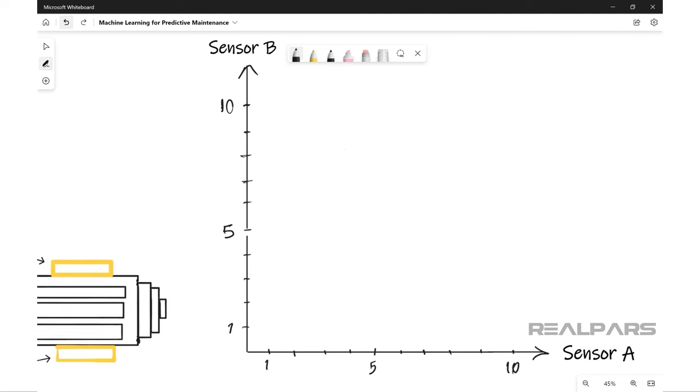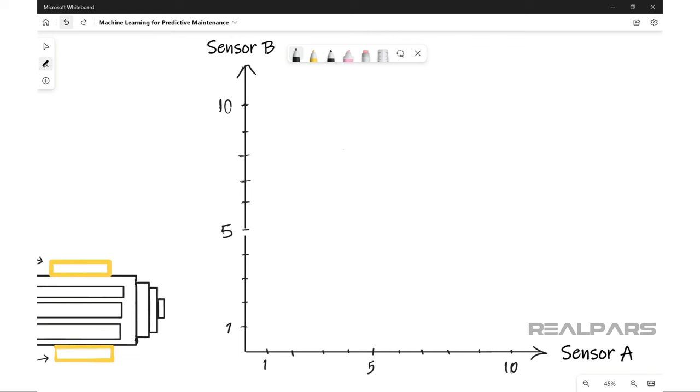Now let's say that at a random point in time I see that the value for sensor A is 2 and the value for sensor B is 3.